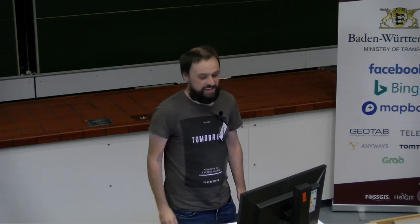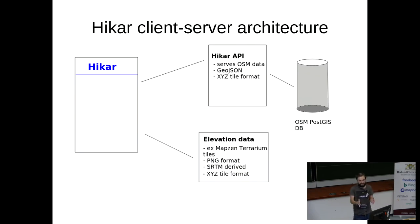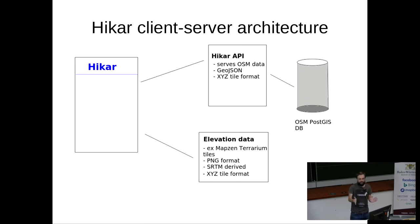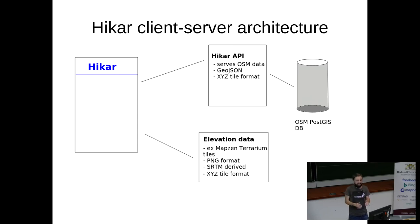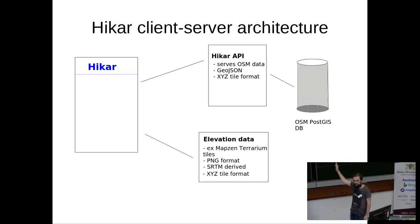Regarding the architecture of HiCar: the app makes a request to the HiCar API, which serves OpenStreetMap data in GeoJSON. It's a tiled server using the standard XYZ tile format, serving vector GeoJSON data. The HiCar API is backed by an OSM PostGIS database — the same PostGIS database that Mapnik uses, populated with osm2pgsql.